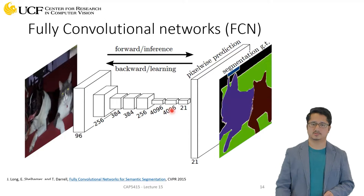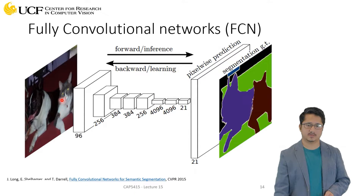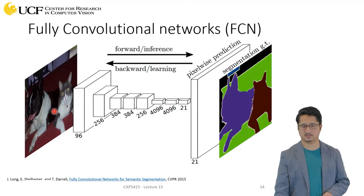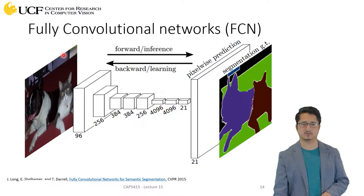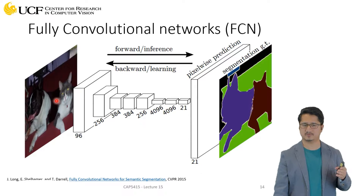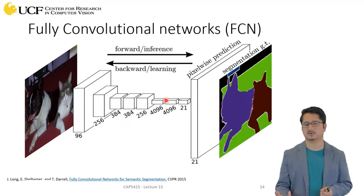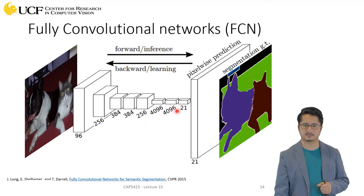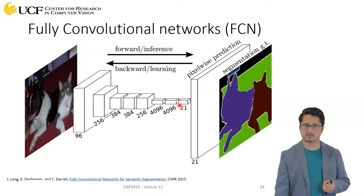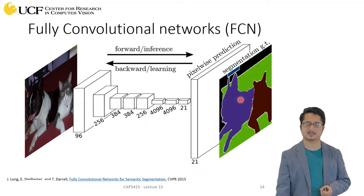We can use fully convolutional networks to encode images. These encodings or features represent what objects or parts of objects are present in the input image. The goal is not just classification — instead of predicting 21 different numbers for 21 categories, we're going to extend the network and do pixel-wise prediction.